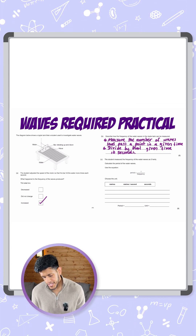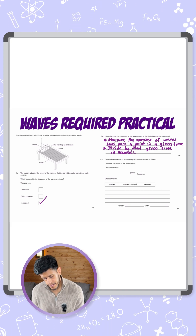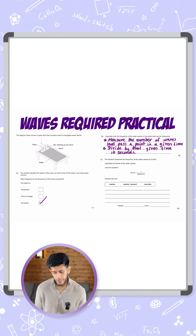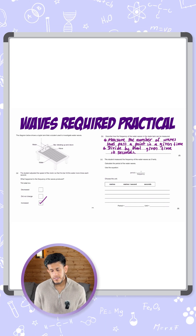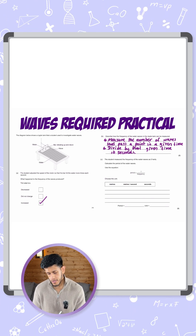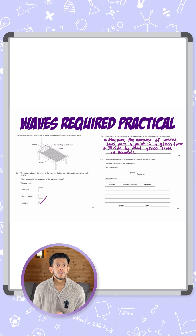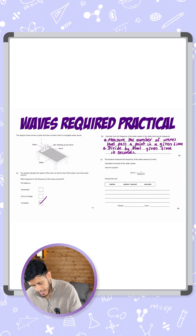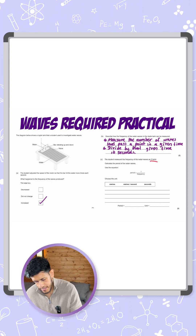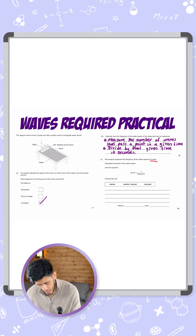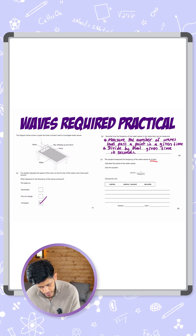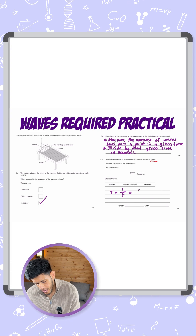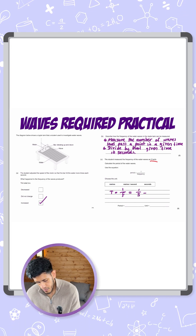Lastly, the student measured the frequency of the wave as 5 Hz. Calculate the period of the water waves using the equation: period equals one over frequency, and choose the unit. That's two marks for the value and one mark for the correct unit. The frequency is 5 Hz, so substituting into the equation: time period T equals one over frequency f, which is one over 5 Hz.